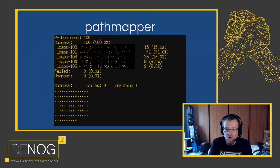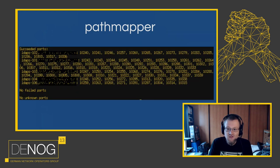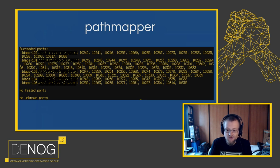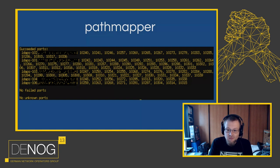The square grid visualization is used because failures in ECMP fabrics on specific links tend to produce patterns, and humans are pretty good at picking up patterns. The tool also gives a list of ports that succeeded, failed, or were unknown. For any failed port it finds, it will show command lines for traceroute, MTR, or Paris traceroute that you can use to find the path the packet took, hopefully pointing you to a specific link or device that isn't working as expected.